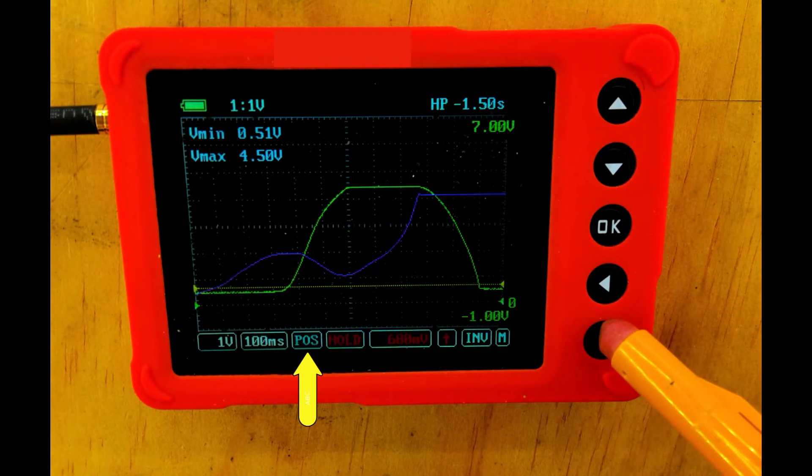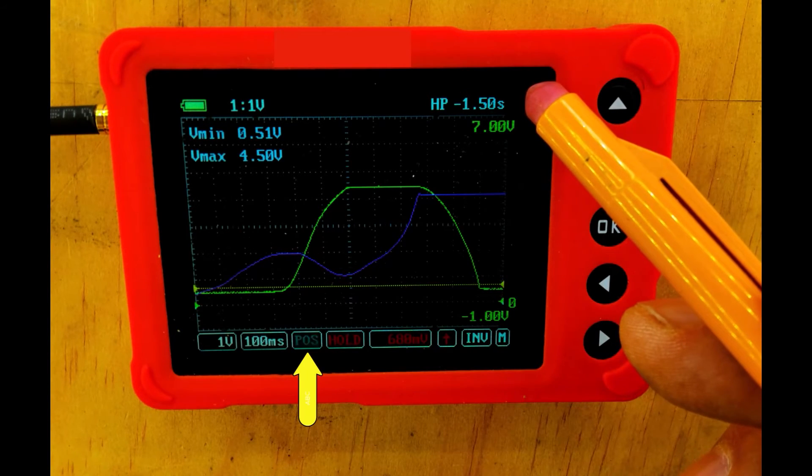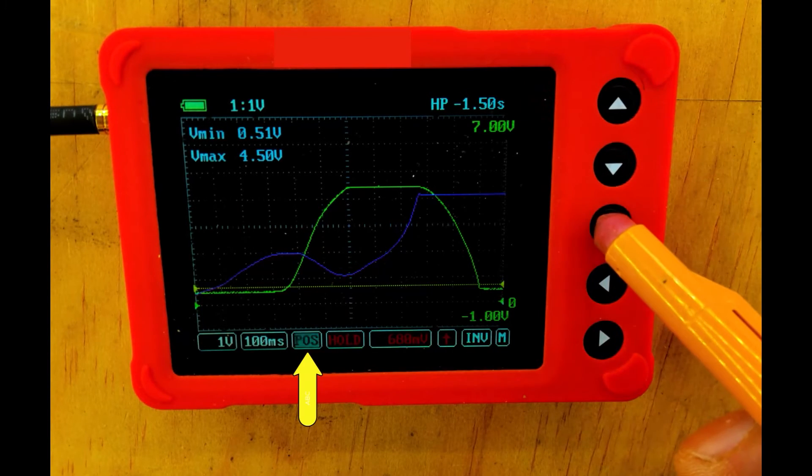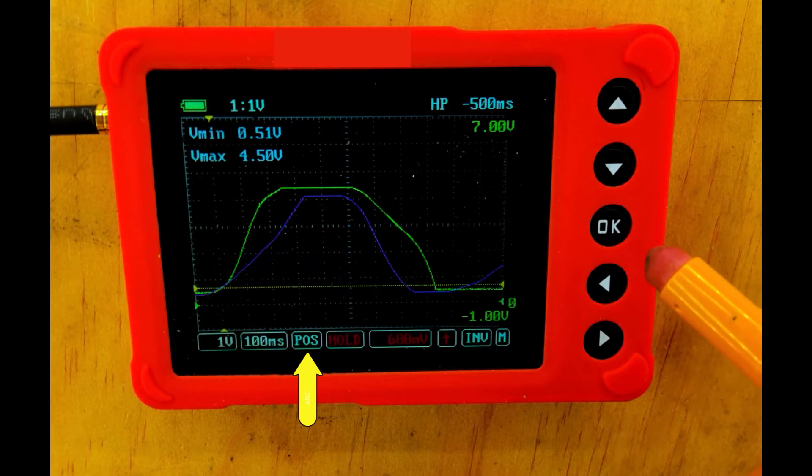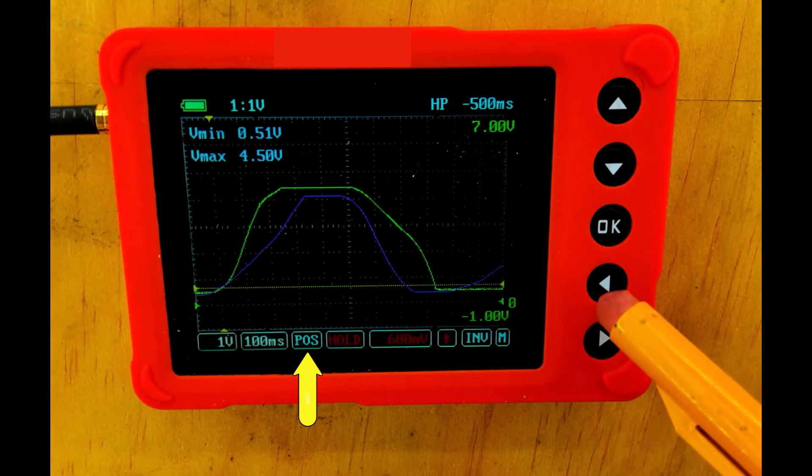If I want to get back to the middle position, because this minus 50 up here shows the position we're at, just press and hold the OK button for a second. Then we're going to change that time back to what it was at.